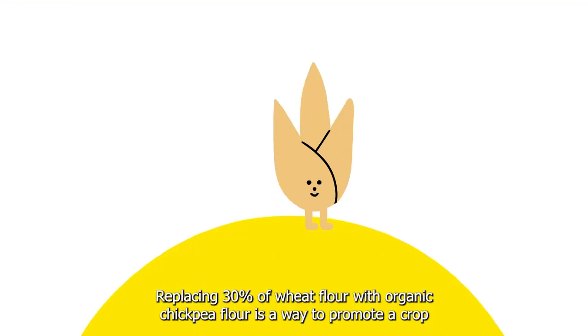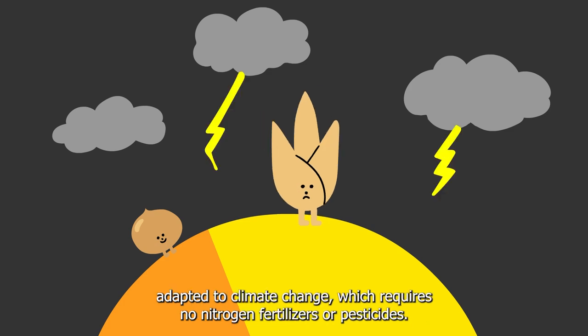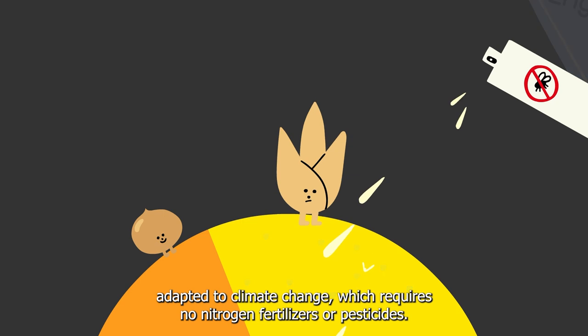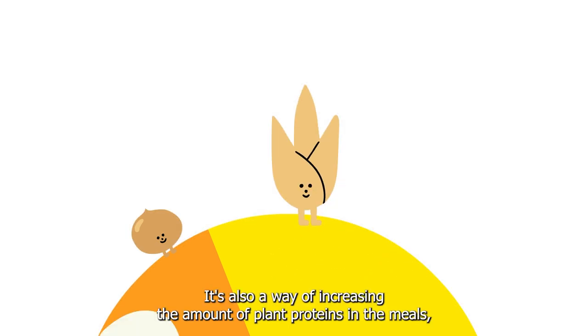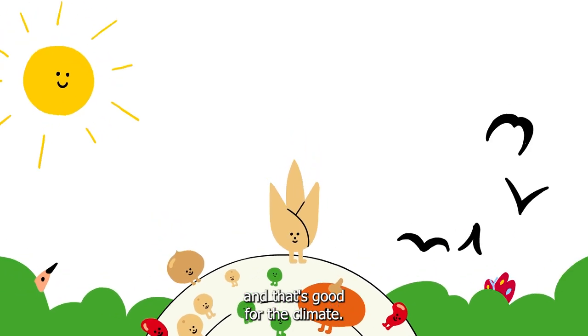Replacing 30% of wheat flour with organic chickpea flour is a way to promote a crop adapted to climate change, which requires no nitrogen fertilizers or pesticides. It's also a way of increasing the amount of plant proteins in the meals, and that's good for the climate.